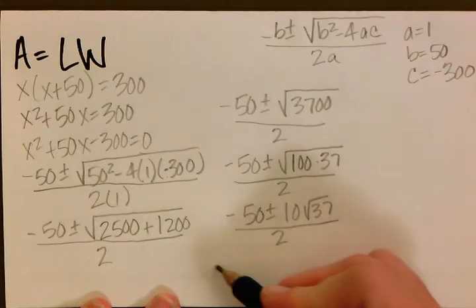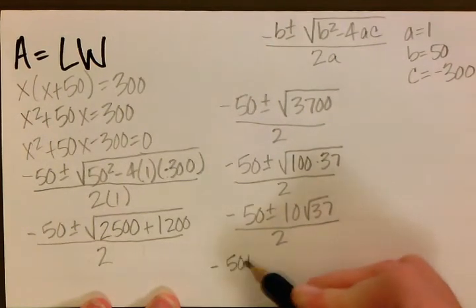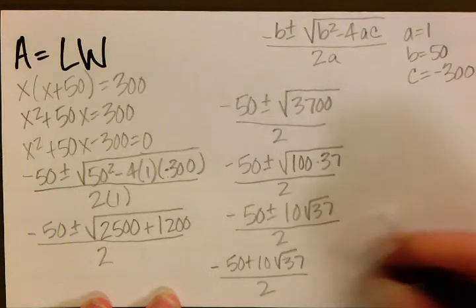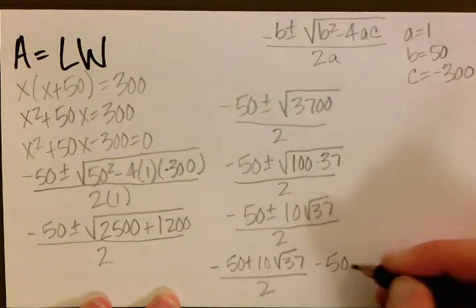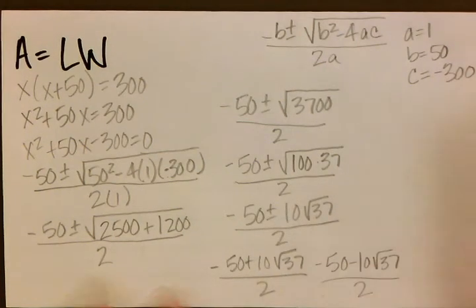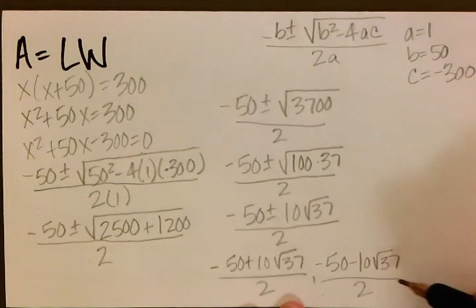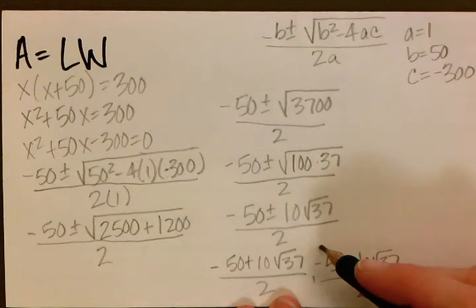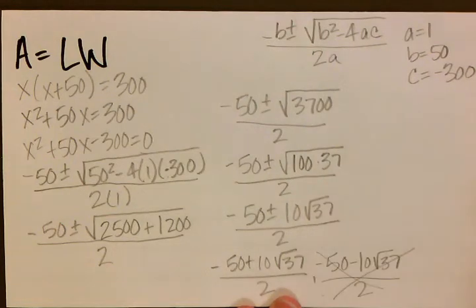That gives us negative 50 plus 10 square root 37 all over 2, and negative 50 minus 10 square root 37 all over 2. There's no possible way for us to have a negative number here because we're talking about distance and length. So immediately we can scratch the negative.